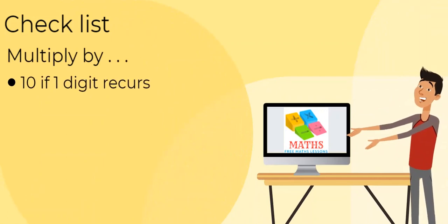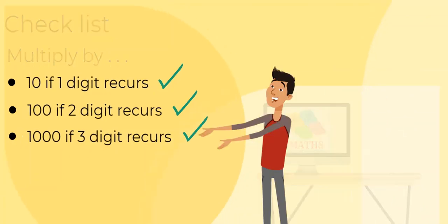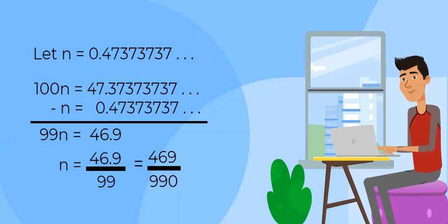Here is a checklist. Show that the recurring decimal 0.473 can be written as the fraction 469 over 990. Pause the video to answer this question. Here's the working out.